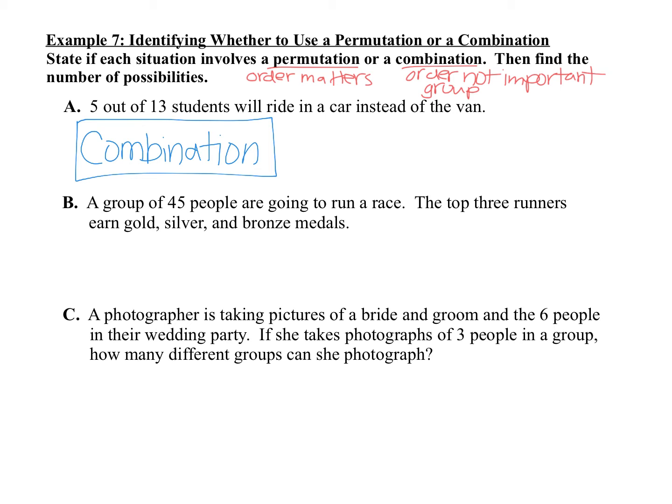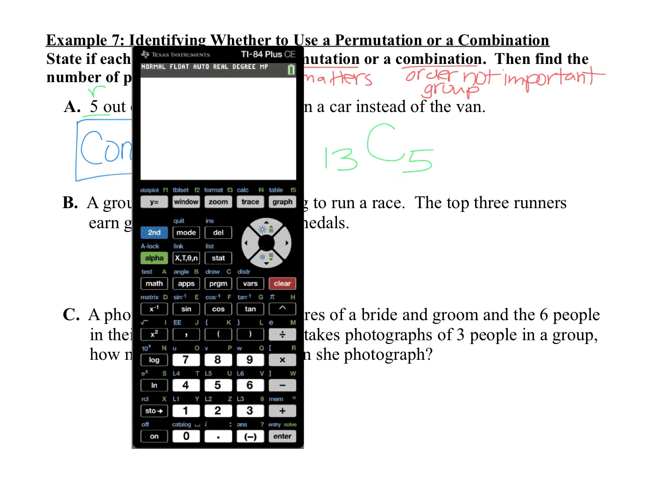Then we'll actually calculate it. We have a total of 13 students, that's my N, and I want to pick 5 of them, so R is 5. 13C5, we can put into a calculator. Remember when you're typing this in your calculator, you can start by typing in the number N, so type 13, then go to math, arrow over to probability, and we want the combination, which is the third one down here. Click enter, and now you can fill in your R of 5. 13C5 is 1,287. There's 1,287 ways that we can pick 5 students to ride in the car instead of the van.